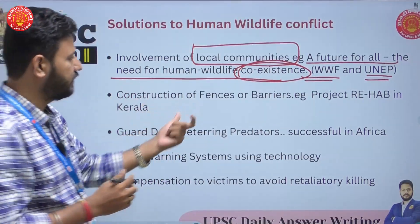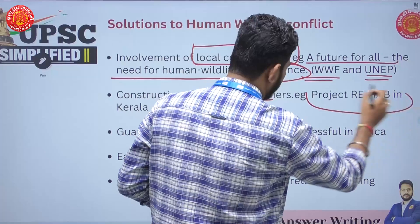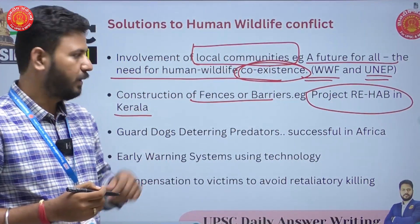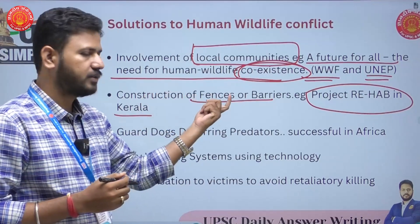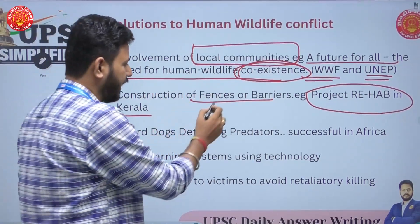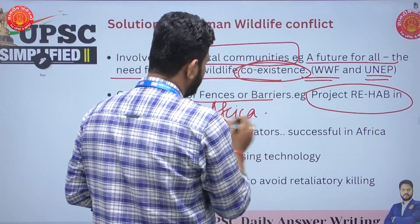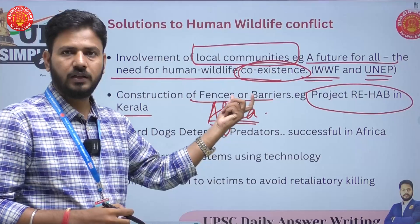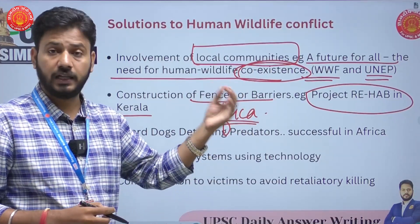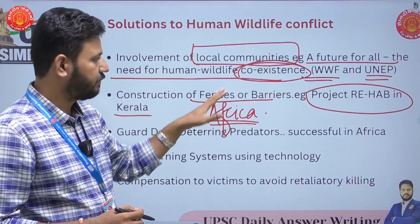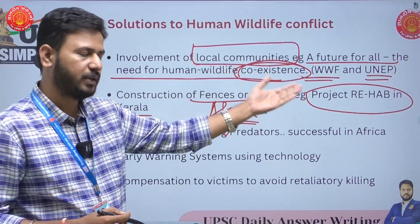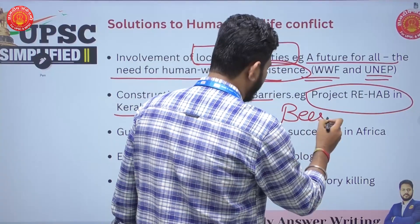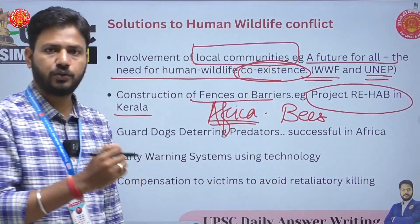Then there is construction of fences or barriers. We have Project Rehab in Kerala, which includes building of fences. In Africa, they build solar fences because in India, the fences we build result in many elephants being electrocuted. Under Project Rehab, building solar fences and barriers is one good example. Here, bees are also being used to actually stop elephants from coming into human settlements.